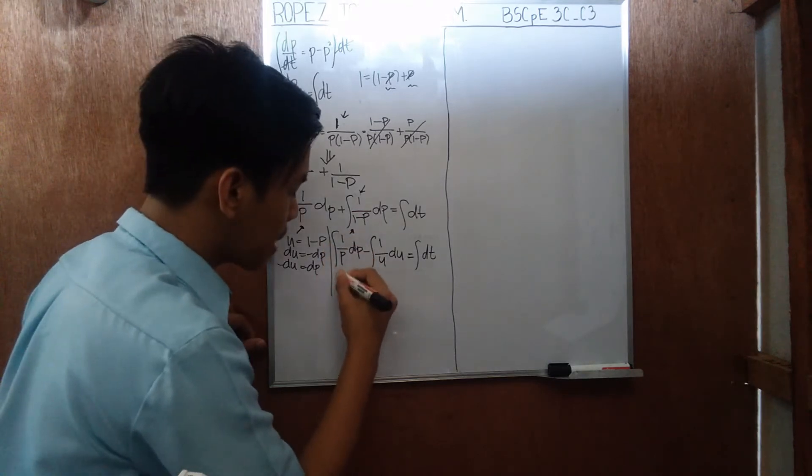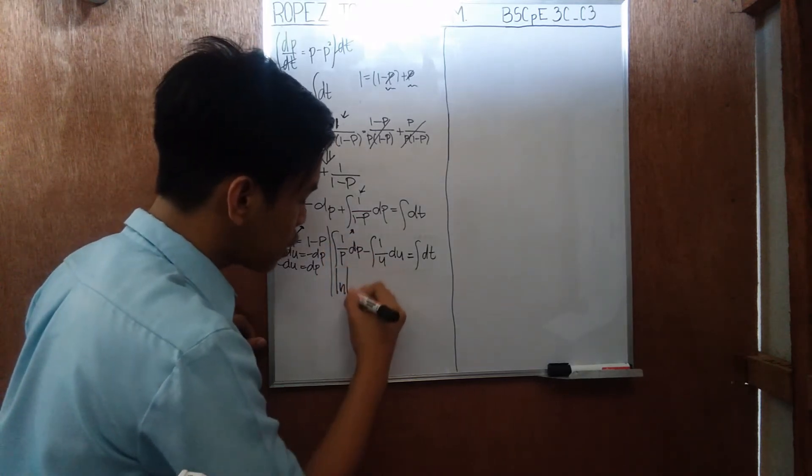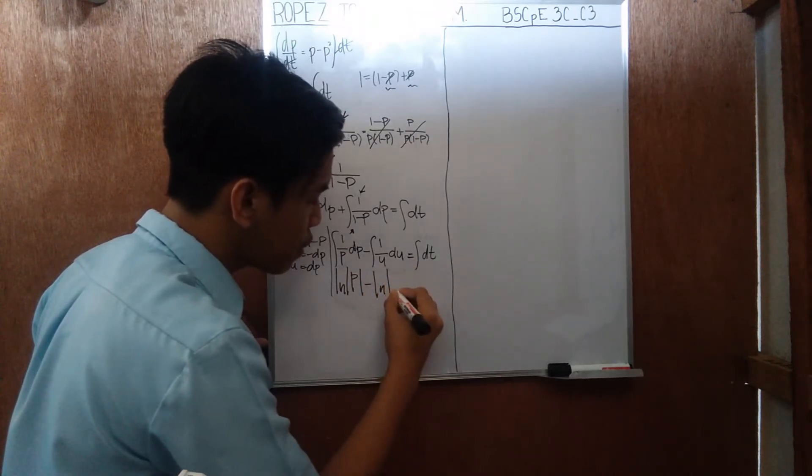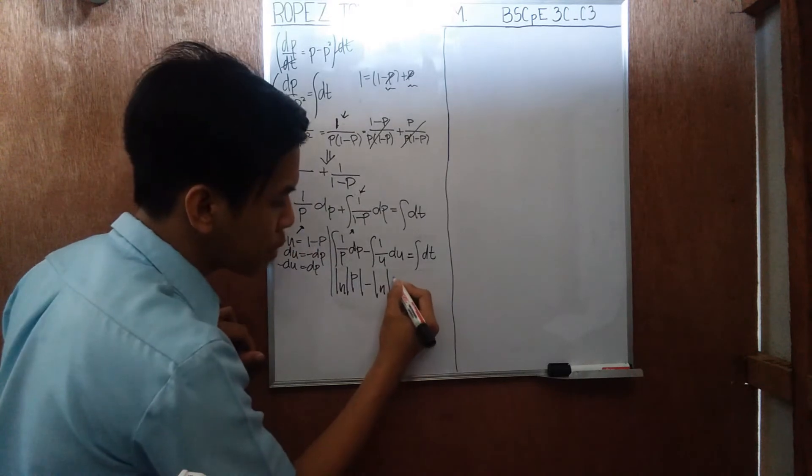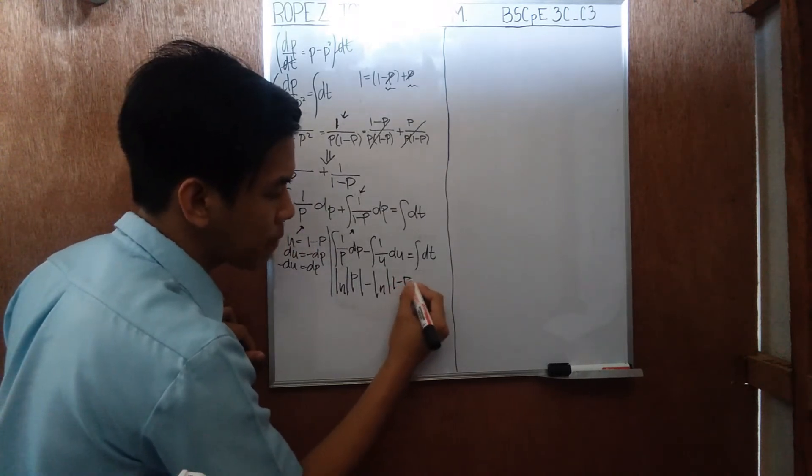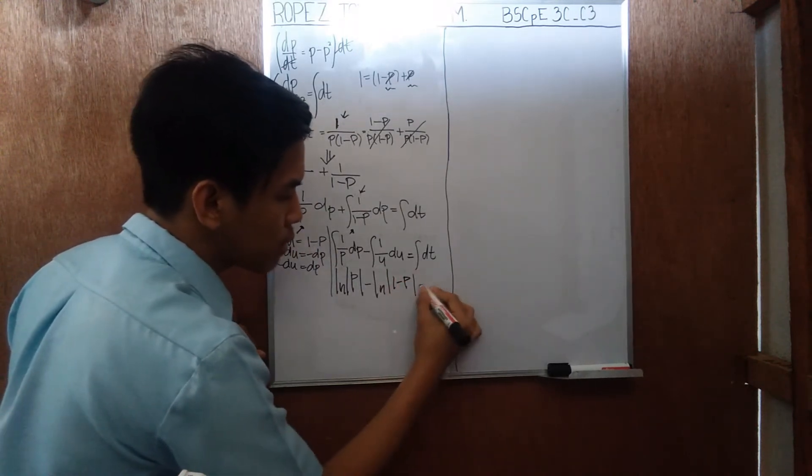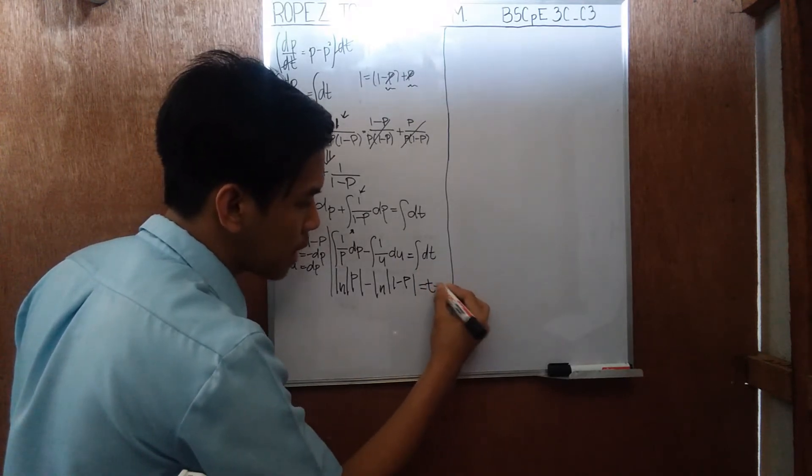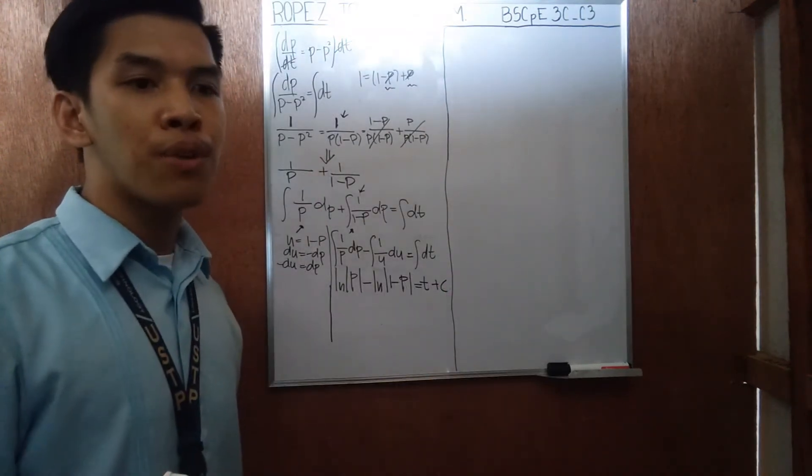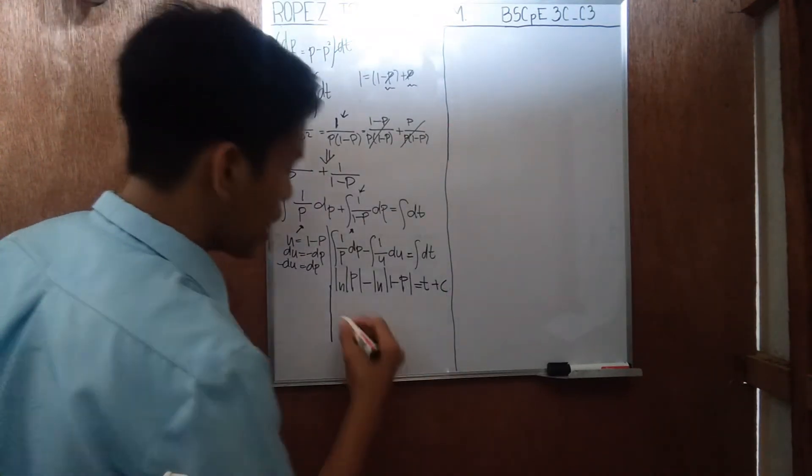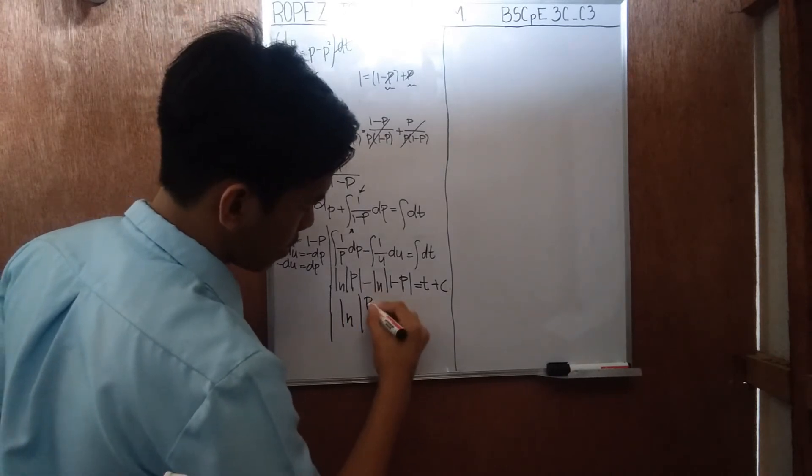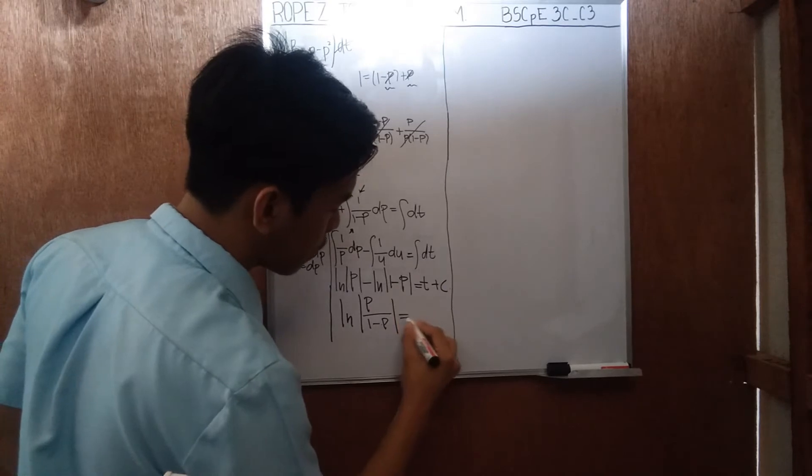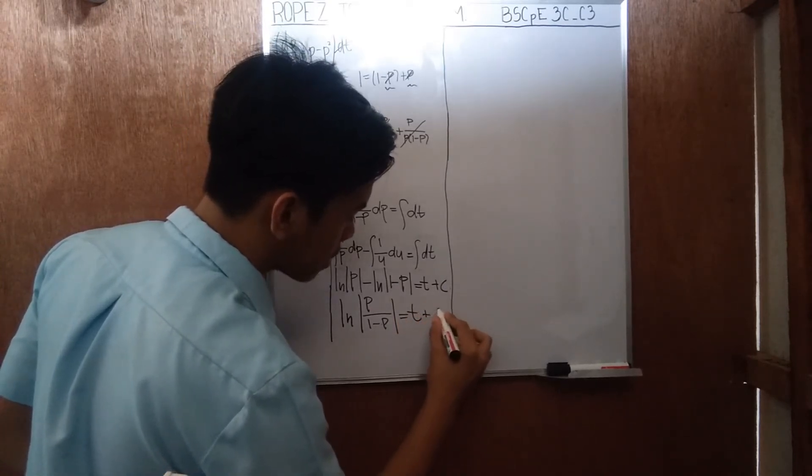So this will give us ln absolute value of p minus ln absolute value of u. So since u is equals to 1 minus p, we are just going to write here 1 minus p is equals to the integral of dt, t plus c. Here we can use quotient rule for natural log: ln p over 1 minus p equals to t plus c.